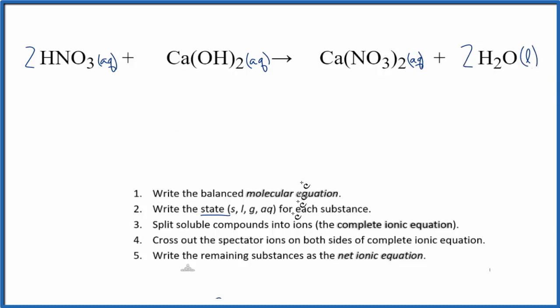So we have the states. Now we can split the soluble compounds up into their ions. This will be the complete ionic equation. Only the soluble compounds can be split apart—those are the ones with aqueous. Before we do that, we should figure out the charge on each of the ions so we can split it apart.